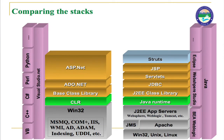This diagram compares the structure of Java and .NET. In Java technology we have Struts, JSP, Servlet, JDBC, J2EE, class library, and Java runtime. Comparing it with Microsoft technology, we can see ASP.NET, which is used for website and web server design — the equivalent of Struts, JSP, and Servlet in Java.